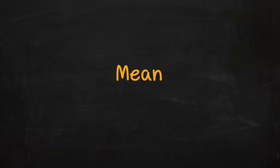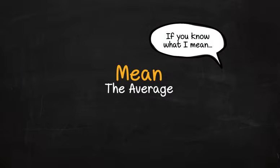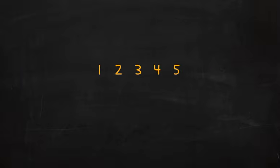We will start with the mean. The mean is more often called the average, which brings up a very important question. If you are average, does that mean that you are mean? Well, not necessarily, if you know what I mean. Anyway, to find the average of a group of numbers, add them up and divide by how many numbers there are in the group.